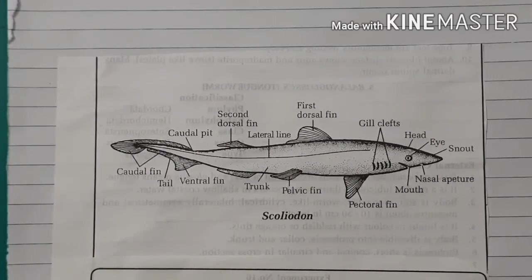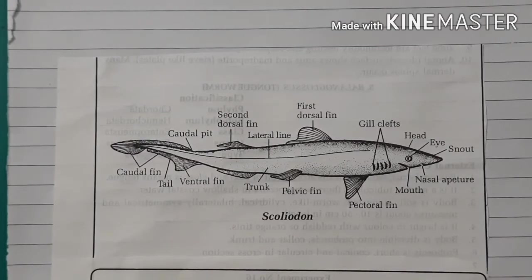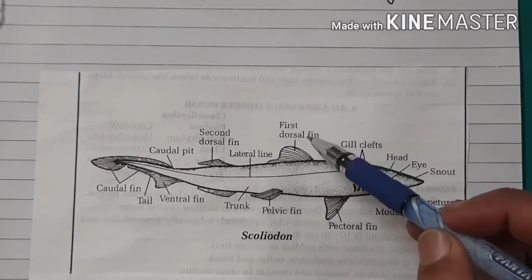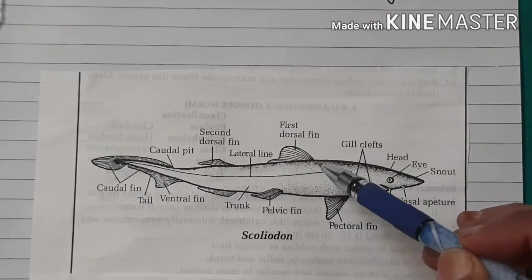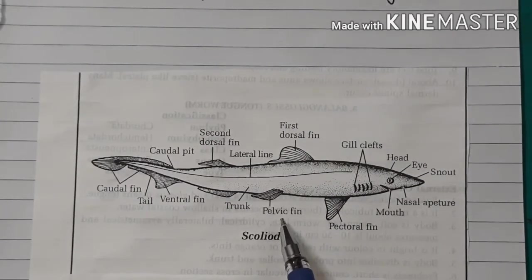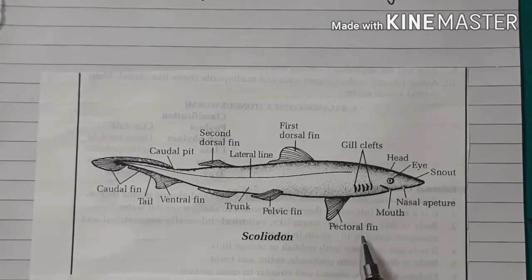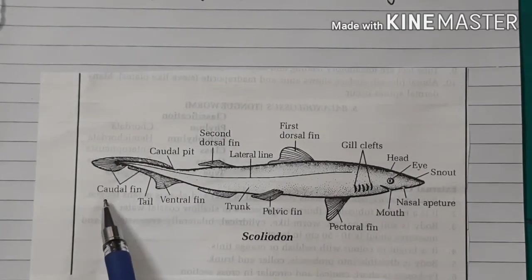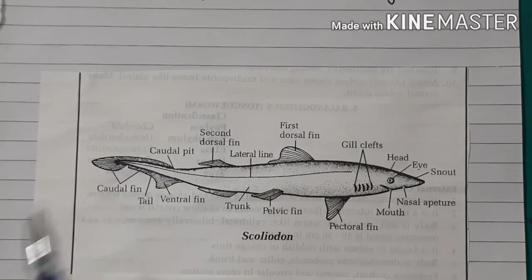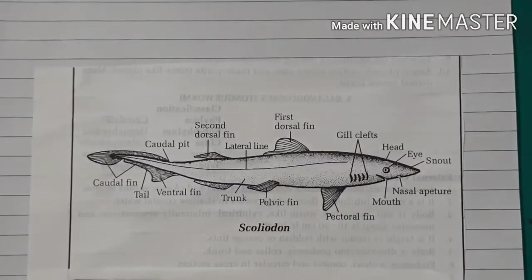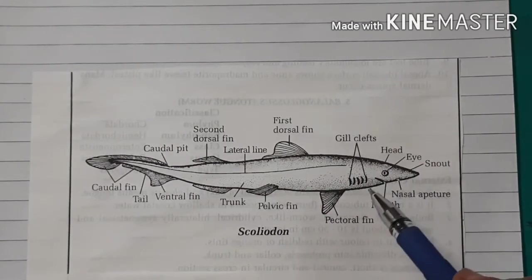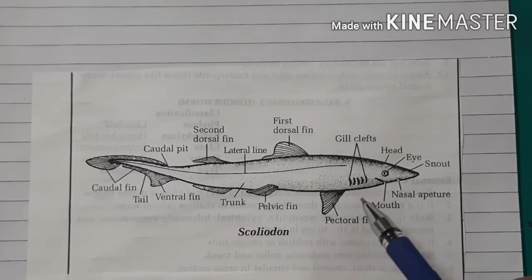Chondrichthyes is exclusively marine. The endoskeleton is cartilaginous. Exoskeleton consists of placoid scales. Mouth is ventral in position. It consists of a dorsal fin, pelvic fin, and ventral fin. The caudal fin is asymmetrical, present at the last part. Respiration by 5 to 7 pairs of gills. Observe the gills — they are not covered by the operculum.